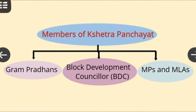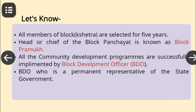Let's know how a Chhetra Panchayat is formed. The members of a Chhetra Panchayat are Gram Pradhan, BDC members, and MPs and MLAs of that area. All the members are selected for 5 years. The head or chief of the block or Chhetra Panchayat is known as Block Pramuk. All community development programs are successfully implemented by the Block Development Officer, who is a permanent representative of the state government.